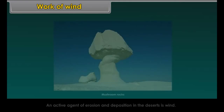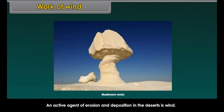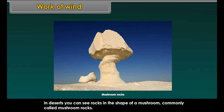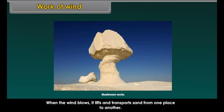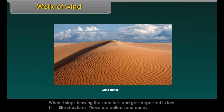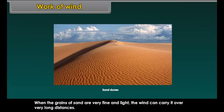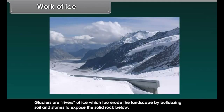An active agent of erosion and deposition in the deserts is wind. In deserts, you can see rocks in the shape of a mushroom, commonly called mushroom rocks. Winds erode the lower section of the rock more than the upper part, so such rocks have a narrower base and wider top. When the wind blows, it lifts and transports sand from one place to another. When it stops blowing, the sand falls and gets deposited in low hill-like structures called sand dunes. When the grains of sand are very fine and light, the wind can carry it over very long distances, and when such sand is deposited in large areas, it is called loess.